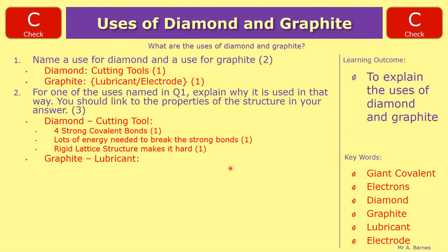If we move on to graphite, which is your lubricant. This one has three strong covalent bonds, forms sheets or layers. You could have put either word there, and those layers can slide past each other. You could have also put it's slippery and soft.